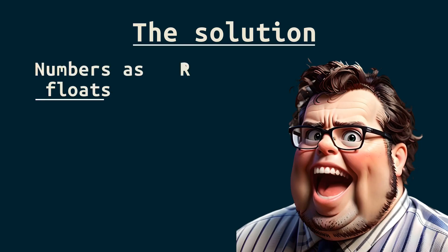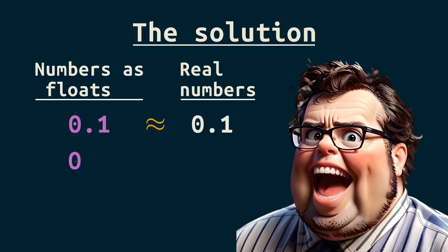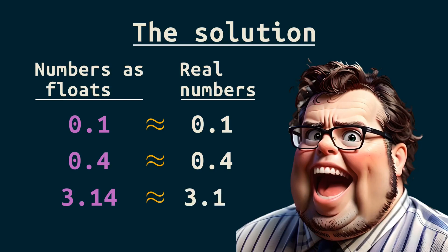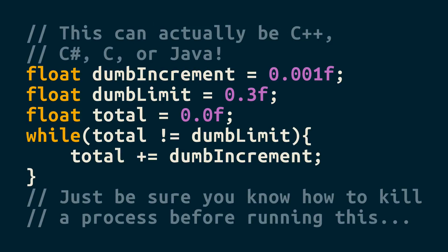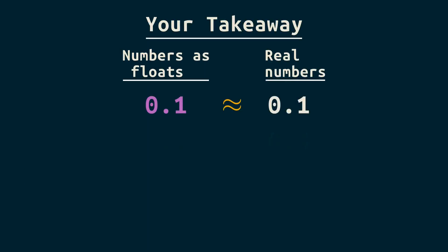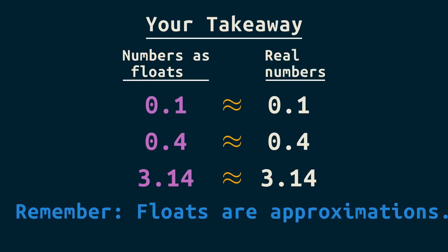Just remember that floating point numbers are approximations. As you code, assume they will be slightly inaccurate. Like in the C++ code we saw earlier, just assume these two values will never be exactly equal — make an adjustment for that. Floating point numbers are approximations; treat them as such, and you'll be fine.